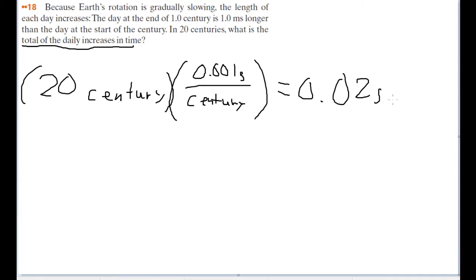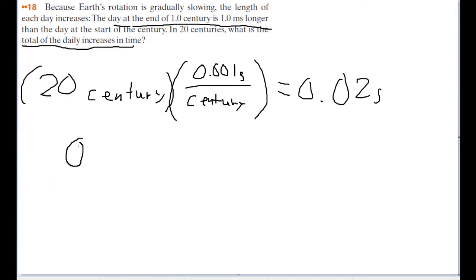Well, if we know how much longer it will be 20 centuries from now, and we assume that this rate of increase is constant and uniform, then we can take an average of this total amount of time and assume that average time per day will give us the total sum of the additional time over each day. Let's take the average of the amount of extra time today and the amount of extra time 20 centuries from now. The amount of extra time today is going to be 0 — that's our starting value.